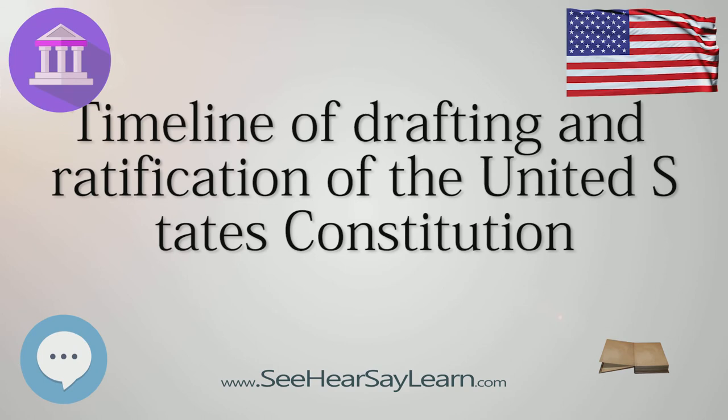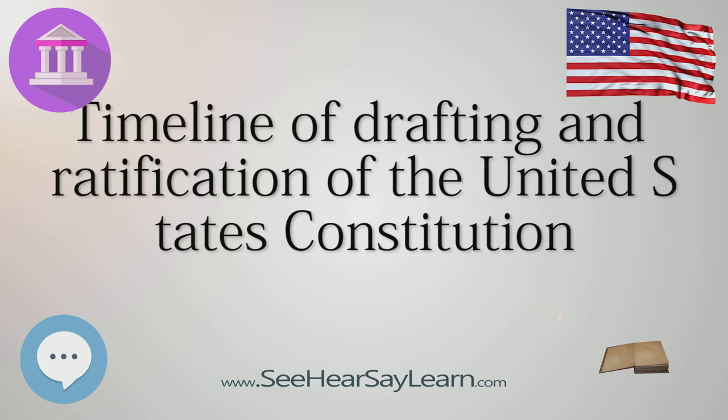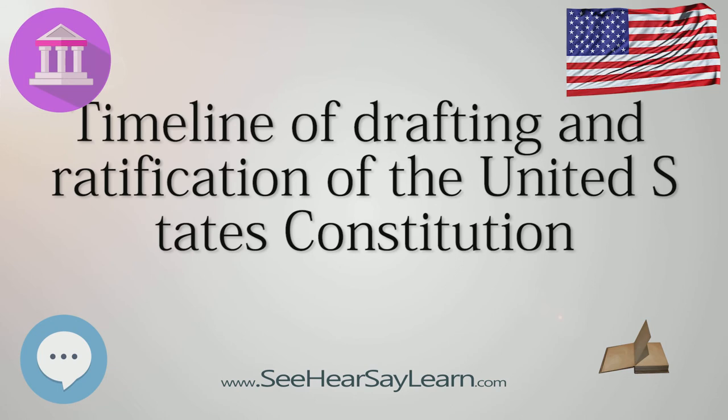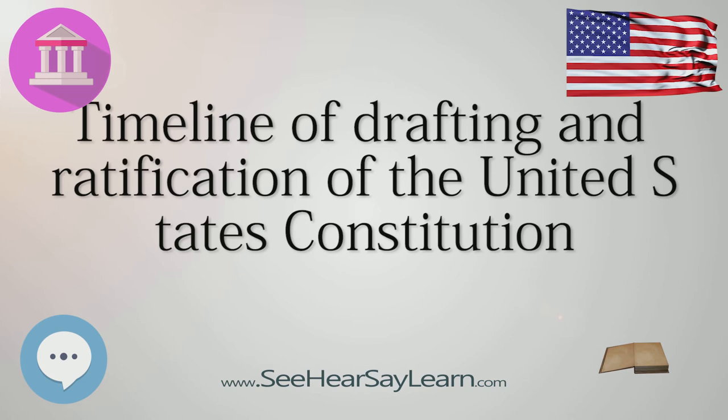November 16: Second ratifying convention begins in North Carolina. November 21: North Carolina becomes the 12th state to ratify the Constitution, 194-77. In addition to ratifying the Constitution, North Carolina requests that 26 alterations be made to it.